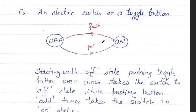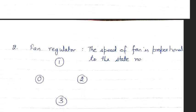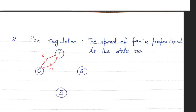We also discussed another example of a plan regulator, where a plan regulator can have two different kinds of actions: clockwise direction and anticlockwise direction. Depending on what kind of action you choose at which particular state, you move into some other state.